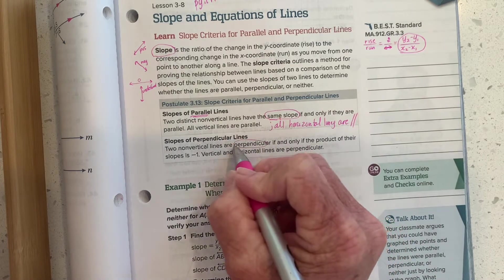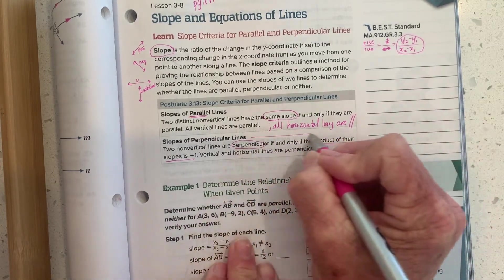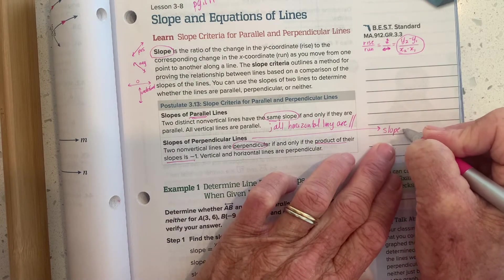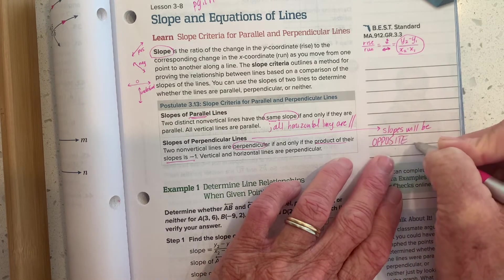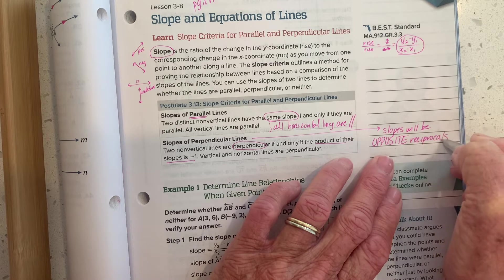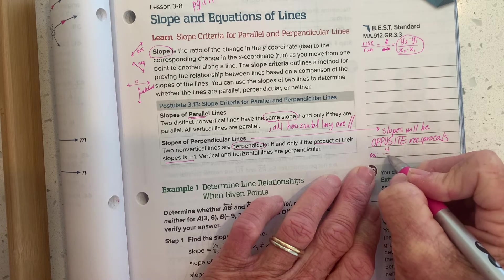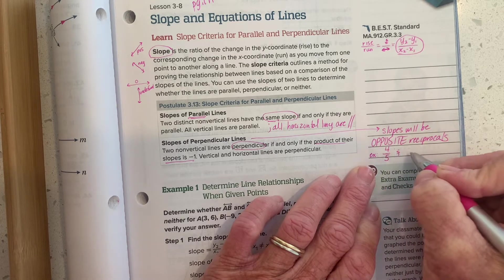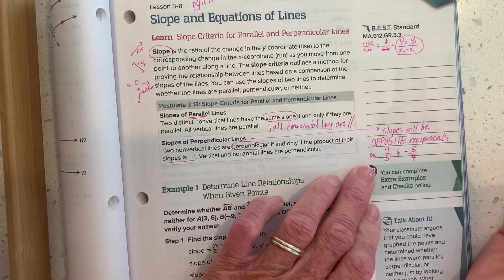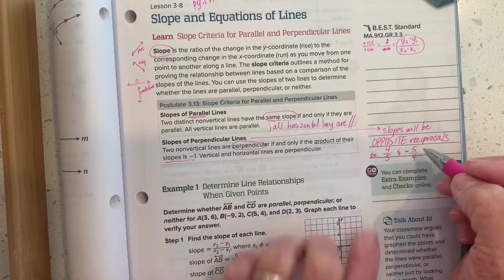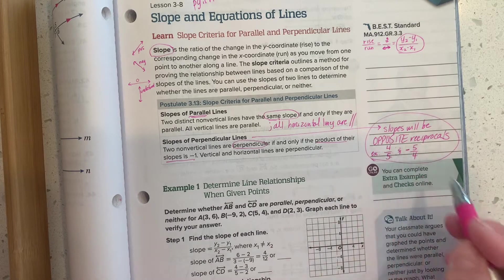If lines are perpendicular, then the product of their slopes is negative one. What does that mean? What that really means is when we have perpendicular lines, their slopes will be opposite reciprocals. An example of that would be if one line had a slope of positive four-fifths, then the other slope, take the reciprocal of that, five over four, this one was positive, the other slope would be negative. They have opposite signs, and they're reciprocals of each other. It is true that if you multiply them together, you would get negative one, but I like thinking of them as opposite reciprocals better.